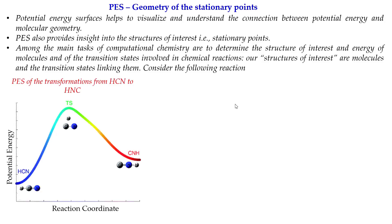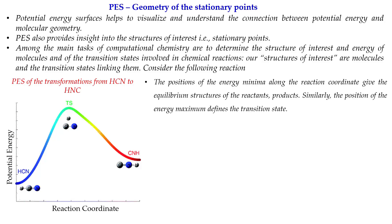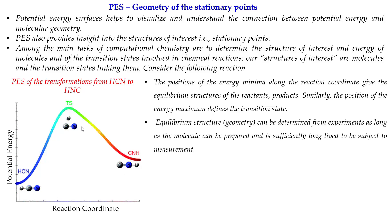Let us consider the following reaction: the transformation from HCN to HNC. We show this on a two-dimensional surface where the reaction coordinate is the HCN bond angle. The positions of the energy minima along this reaction coordinate — HCN and HNC — are the equilibrium structures, and they are connected through a transition state which is the energy maximum on that surface.